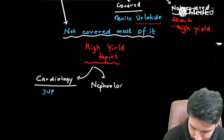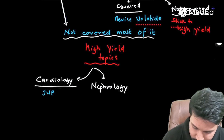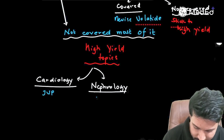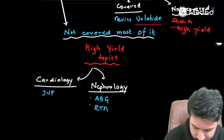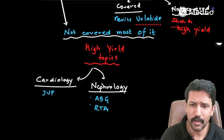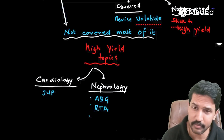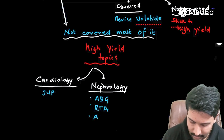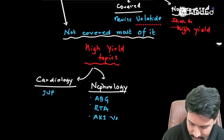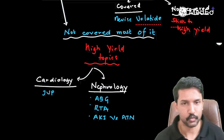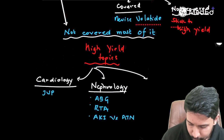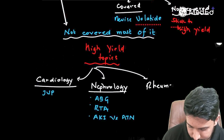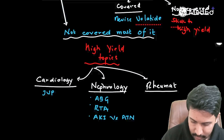From Nephrology, I recommend covering two topics: first, ABG (arterial blood gas); second, renal tubular acidosis (RTA). If you have ten more minutes to spare, also cover AKI versus acute tubular necrosis.